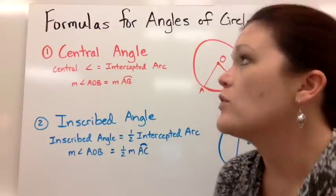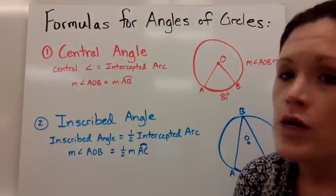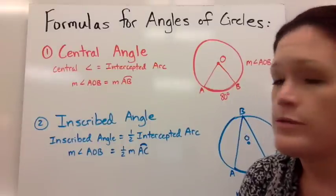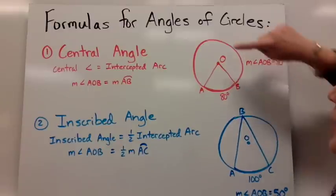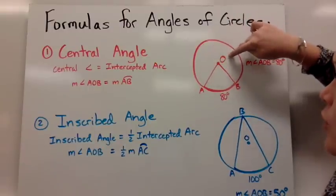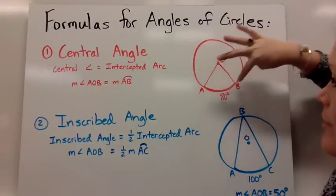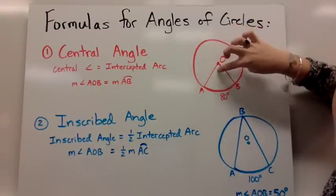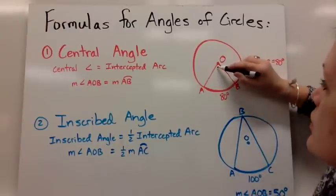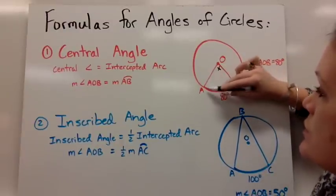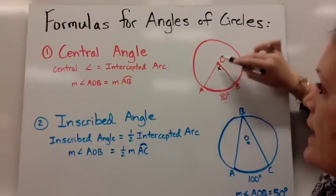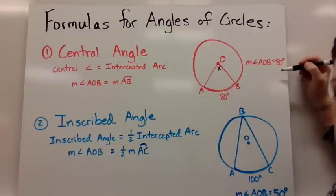So the first type of angle we're going to talk about is a central angle. The central angle is equivalent to the intercepted arc. So with my picture here, I have circle O with arc AB. The central angle, which would be right here at the center, is equal to the intercepted arc. So angle AOB would equal 80 degrees.